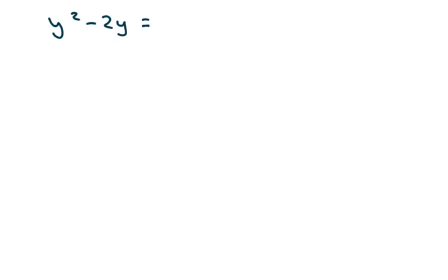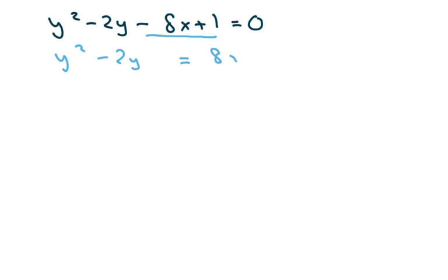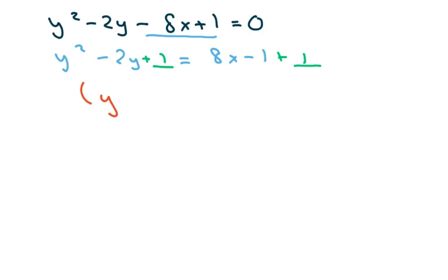For the second parabola, we have y squared minus 2y minus 8x plus 1 equals 0. I'm going to move the 8x and the 1 to the other side: y squared minus 2y equals 8x minus 1. To complete the square, half of negative 2 is negative 1, squared gives 1, so we add 1 to both sides. This gives the perfect square trinomial, written as y minus 1 squared equals 8x.